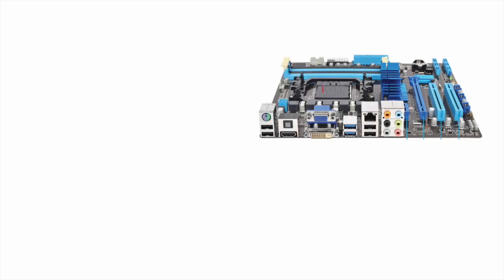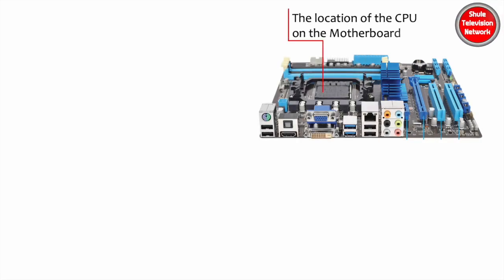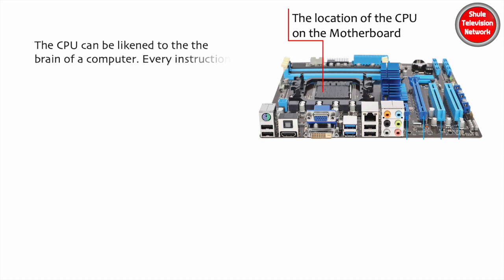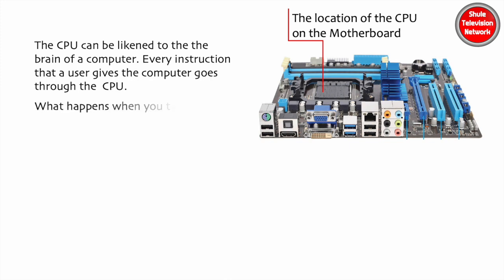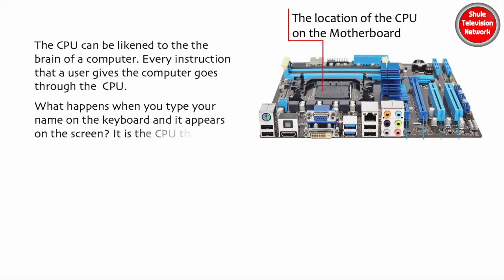The CPU can be likened to the brain of a computer. Every instruction that a user gives the computer goes through the CPU. When you type your name on the keyboard and it appears on the screen, it is the CPU that enables the computer to carry out that task.